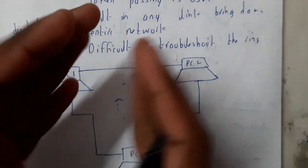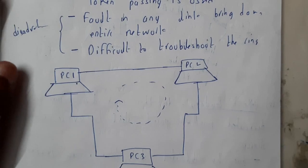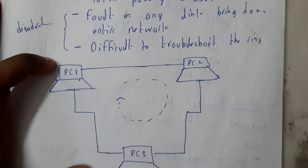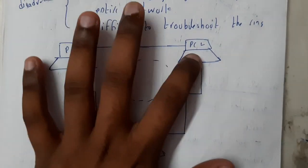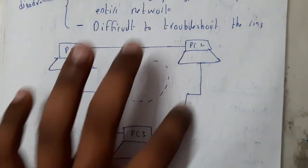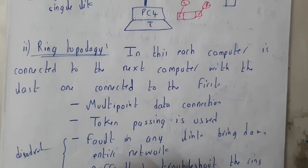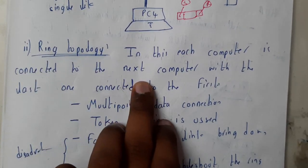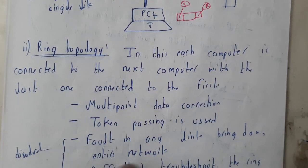Now let us go through ring topology. I'll show the diagram and cover the key points — that will be enough for theoretical understanding. In ring topology, the devices are connected in a ring: PC1 is connected to PC2, PC2 to PC3, PC3 to PC4, forming a circle. Each computer is connected to the next computer, with the last one connected to the first, making it a cyclic process.